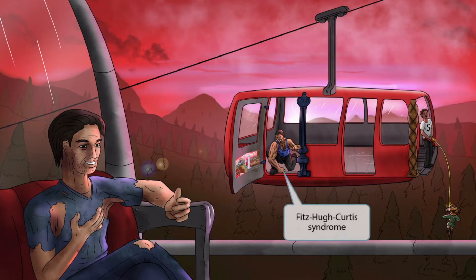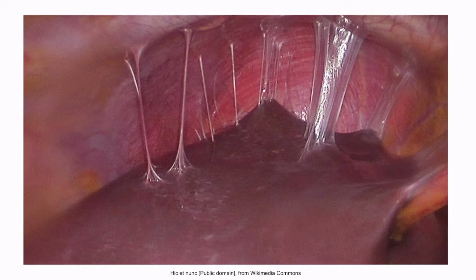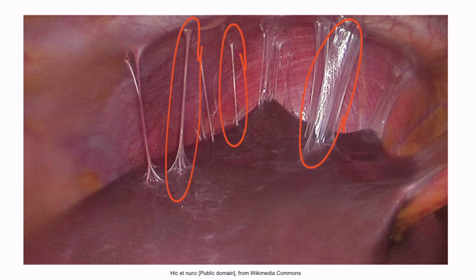Fitz-Hugh-Curtis syndrome is a complication of pelvic inflammatory disease that results in inflammation of the liver capsule. This is an image of Fitz-Hugh-Curtis syndrome — notice the adhesions between the liver capsule and the peritoneum, which are sometimes referred to as violin string adhesions. These occur as a result of liver capsule inflammation.